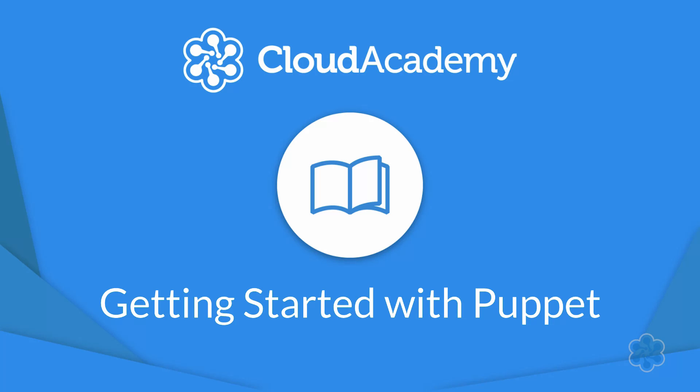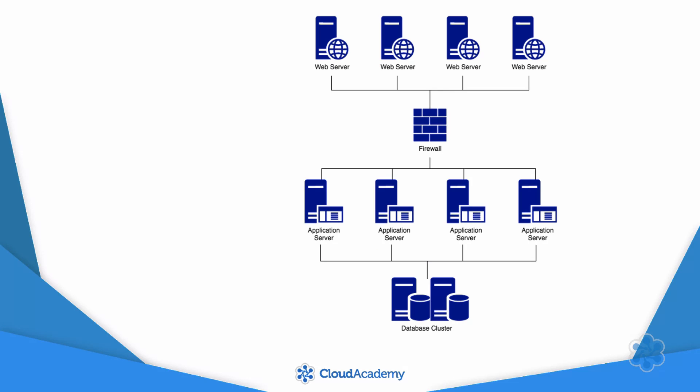But what does that mean? Here is a simplified example of a network of servers. It contains web servers, application servers, database servers, and a firewall. Someone needs to install, configure, and update these components. If that someone is you, then Puppet can help you tremendously.